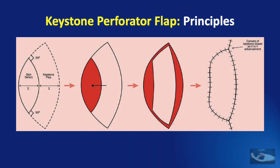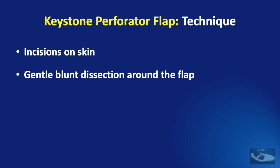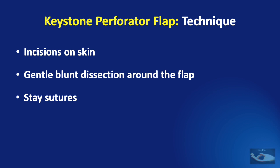Here is how the classical Keystone Perforator Flap is designed, raised, moved, inset, and donor site closed. First, the skin incisions are made. A gentle blunt dissection around the flap is carried out to conserve subcutaneous neurovascular structures and facilitate centripetal mobilization of adjacent tissues inwards and circumferentially. Avoidance of flap undermining ensures preservation of vascularity, lymphatics, and venous drainage, and also avoids flap pin cushioning. Wound closure is accomplished by direct flap alignment using stay sutures, and final wound closure is carried out in a single layer using the horizontal everting mattress method of suturing.